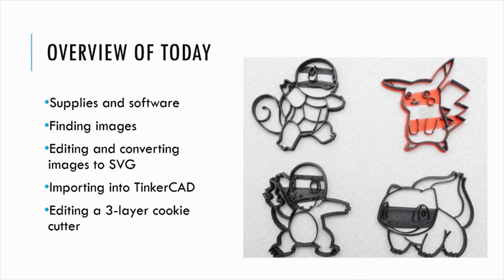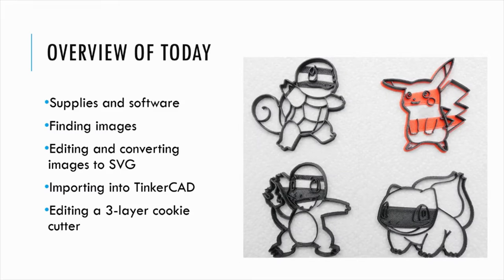We're going to go over first how to find images. This can include picking images that will work — I have a few examples that will work and we'll look over some that won't work for making cookie cutters. After we pick our images, we need to do something called converting it into an SVG file, which is Scalable Vector Graphic. This is the same type of technology used in wood carving, silhouette machines, and Cricut machines. Our goal is to make an outline which will serve as our cookie cutter.